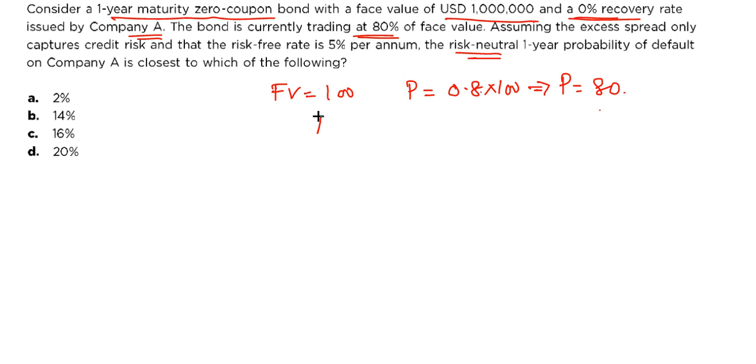They are saying that the recovery rate for this bond is 0% and the spread that this bond is getting. So the spread that is above the risk-free rate is only because of the default risk. That is what they are saying and the risk-free rate they have mentioned is 5% per annum. You are being asked to compute the probability of default.